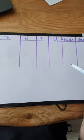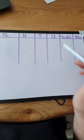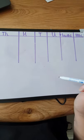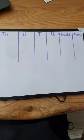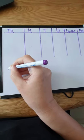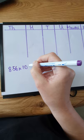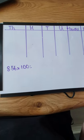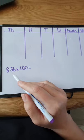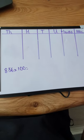We're going to use this today to help us to times and divide by 10 and 100. Have a little think about how can that help us times and divide by 100? What can we do using it? So let's have a look. For example, say we have got 8.56 times 100. We've put the original number into our place value.